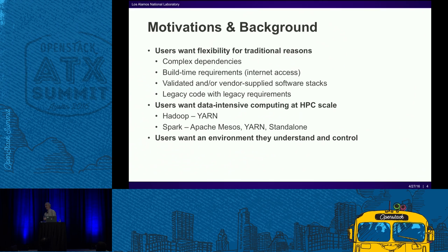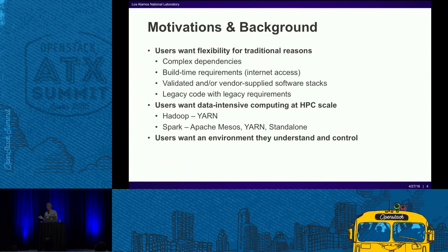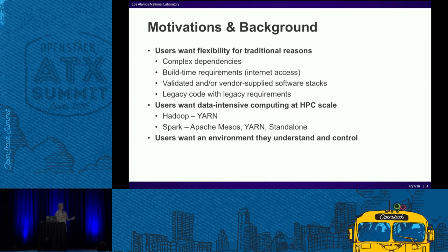We have decades of legacy code at Los Alamos. That code has been vetted time and again, validated against past results and experimental results, and our code teams trust it. They want to just forklift that code onto the new platform, but the world around them hasn't stopped moving. They may have glibc requirements where newer versions aren't always backwards compatible, or old Fortran library requirements that don't exist in the modern world. They need a way to rerun old simulations, and also to validate new code against the old results.